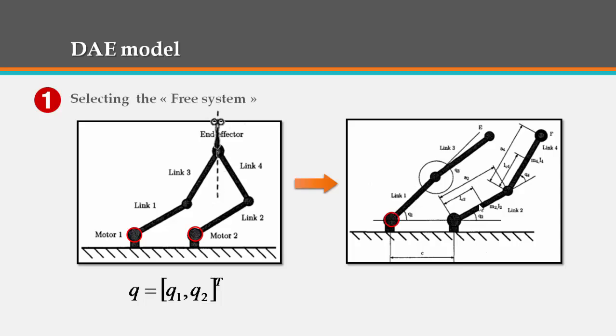And in our free system, the robot in fact is virtually cut open at the end effector. And the vector q' will represent the generalized coordinates vector of the free system.